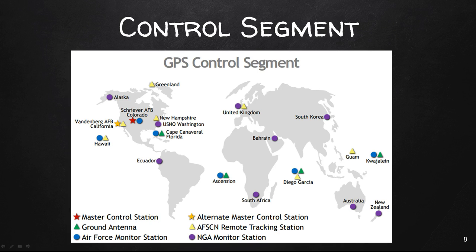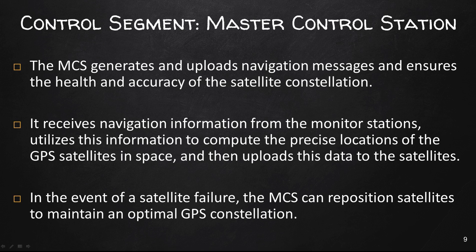The control segment includes the master control station in Colorado, ground antennas, and monitoring stations. The GPS control segment consists of a global network of ground facilities that track the GPS satellites, monitor their transmissions, perform analyses, and send commands and data to the constellation. The master control station generates and uploads navigation messages and ensures the health and accuracy of the satellite constellation.